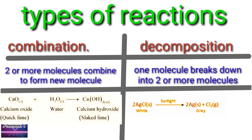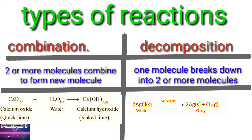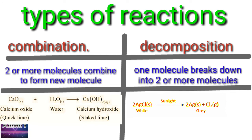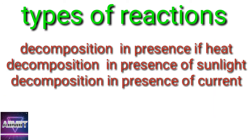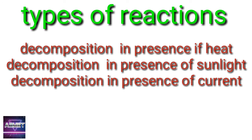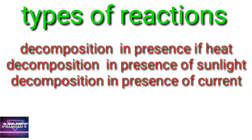A combination example: CaO + H₂O → Ca(OH)₂ — quick lime on hydrolysis gives slaked lime. For decomposition, we study it under three subheadings: decomposition in presence of heat, decomposition in presence of sunlight, and decomposition in presence of electric current.